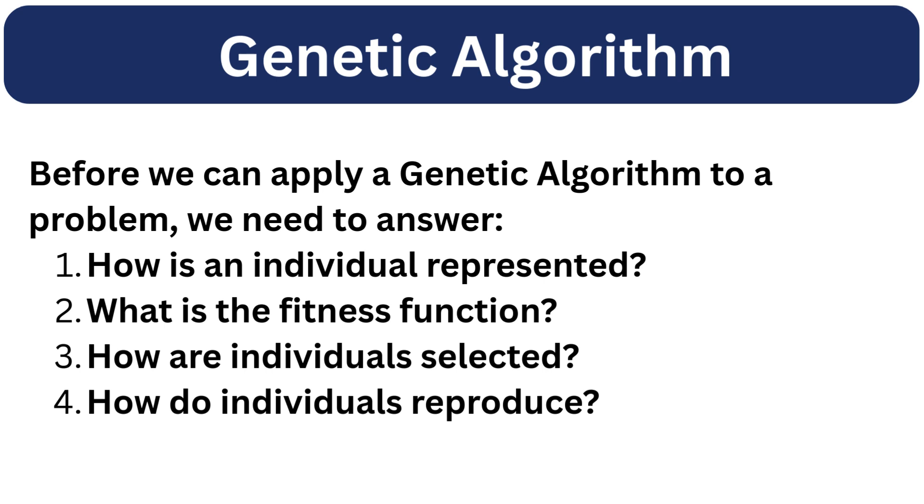Before we can apply a genetic algorithm to a problem, we need to answer these questions. Number 1: How is an individual represented? Number 2: What is the fitness function? Number 3: How are individuals selected? Number 4: How do individuals reproduce? Let's start answering these questions one by one.